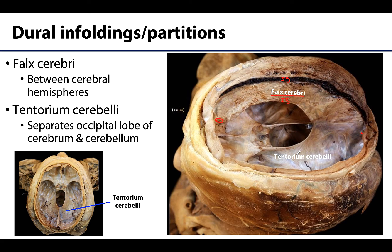The tentorium cerebelli is the second largest partition and will separate the cerebrum — specifically the occipital lobe — and the cerebellum. You can really see its expanse in this particular image; this whole area will be part of the tentorium cerebelli. This partition will attach to the clinoid processes of the sphenoid, extend back towards the petrous parts of the temporal bone, and also extend to parts of the internal surface of the occipital bone. It will also create a region called the tentorial notch, where the midbrain will sit during life, and will serve to separate the tentorium cerebelli from the diaphragma sellae.